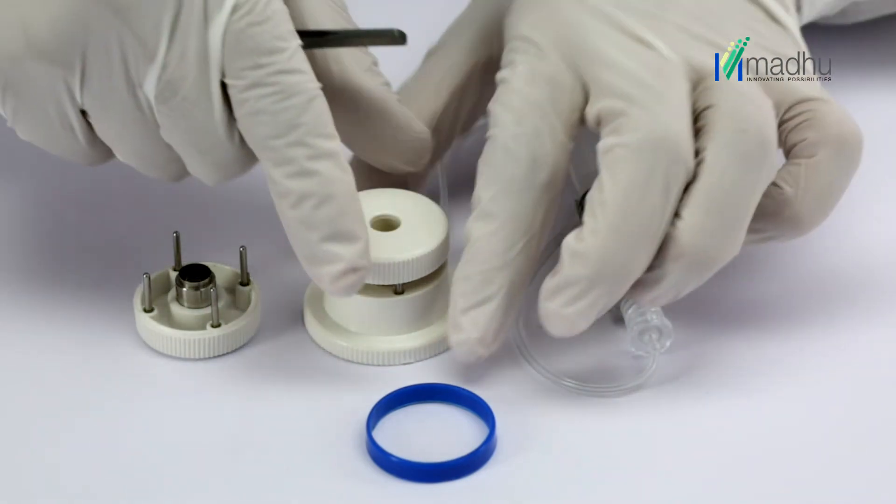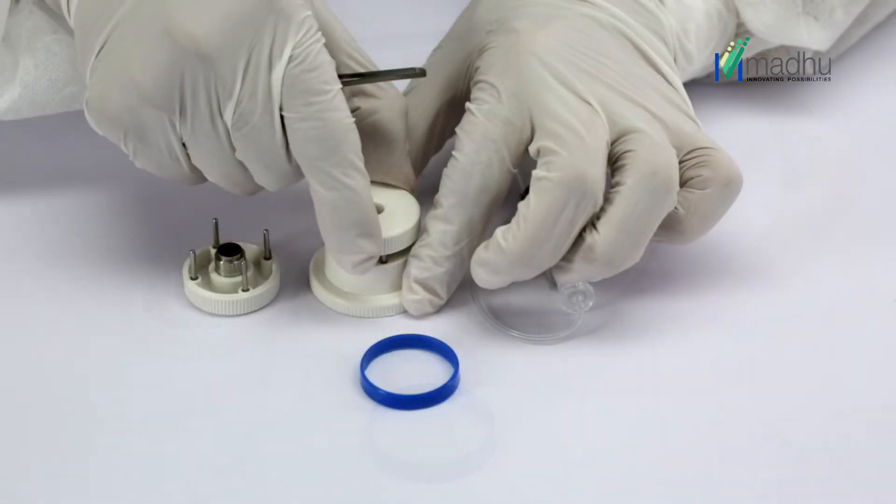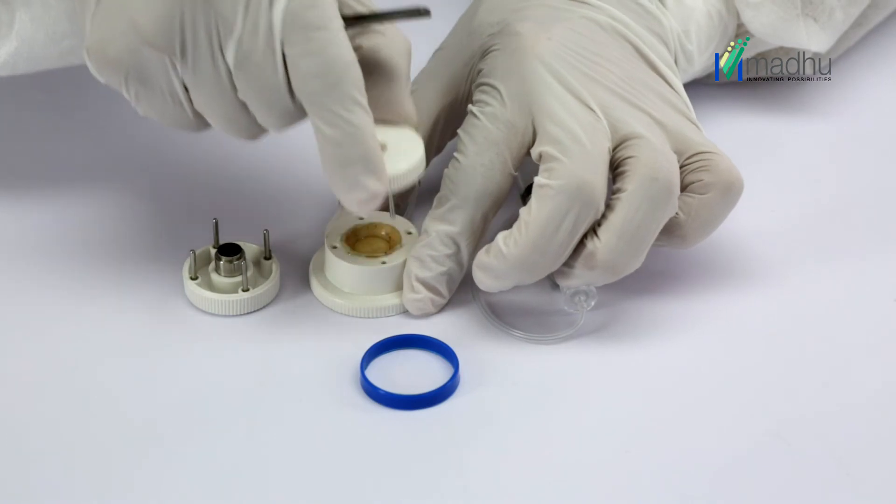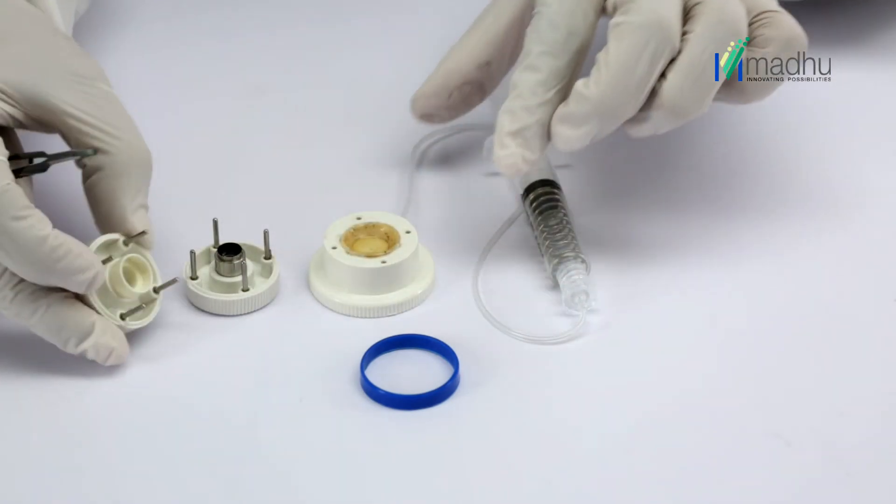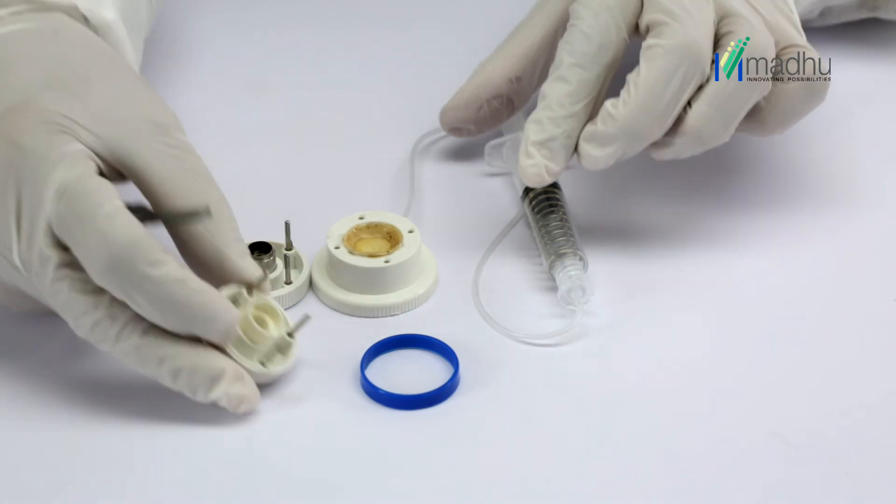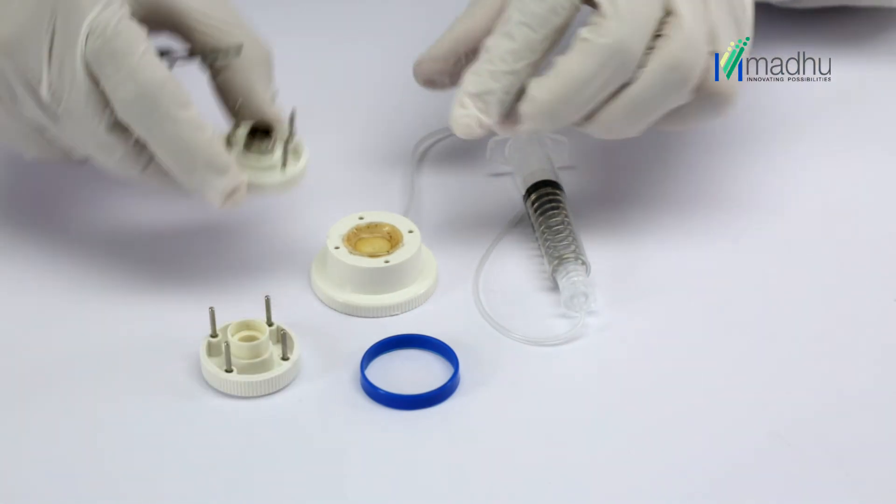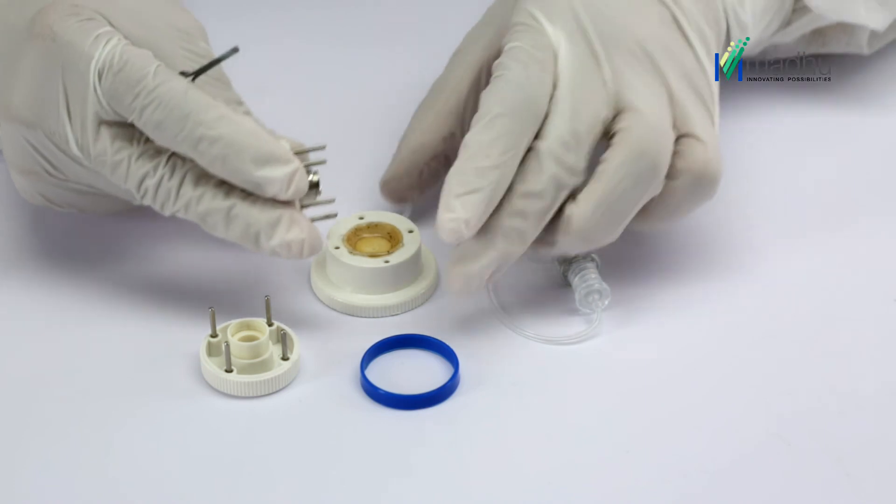While holding the cutting block base with one hand, pull the sitting ring housing upward with the other hand and discard. Now insert the four stainless steel guide pins of the trephine blade housing into corresponding holes in each corner of the cutting block base.